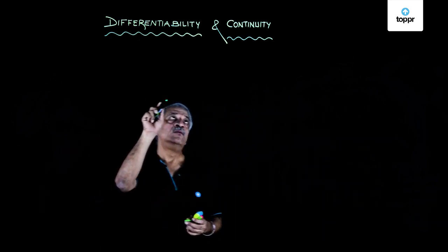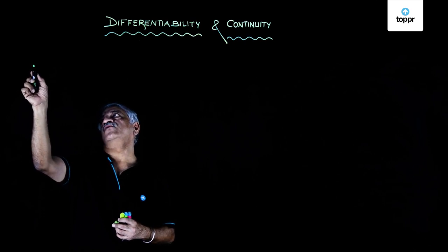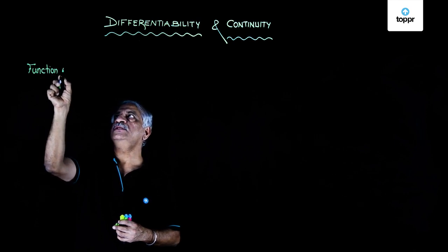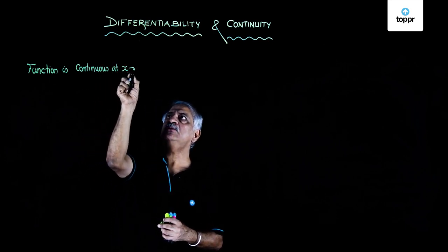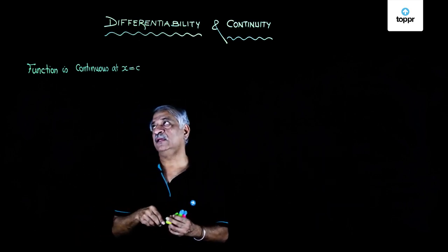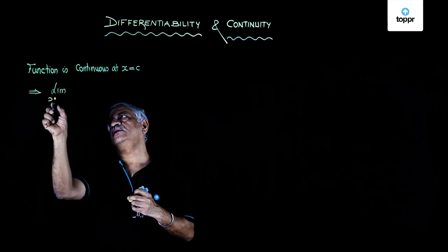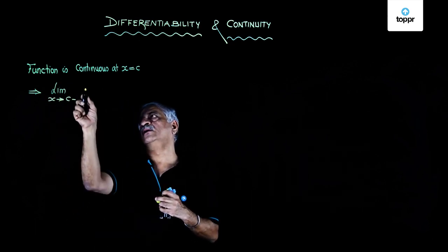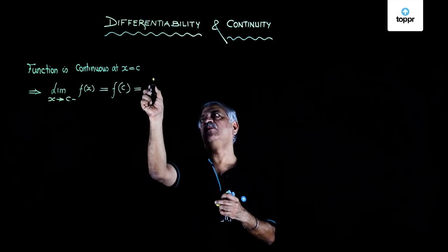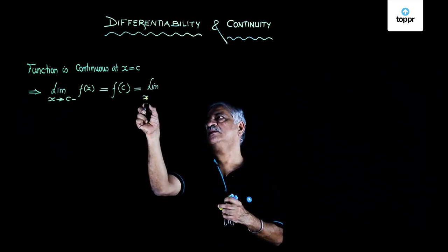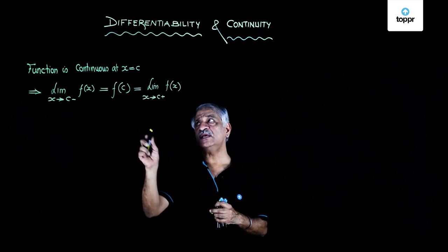Very important that both are based on limits. When we say continuity, that is, function is continuous at x equal to c, this implies that the limit as x tends to c from the negative side of f(x) is equal to f(c), and this is equal to the limit as x tends to c from the positive side of f(x). Then only we say the function is continuous.